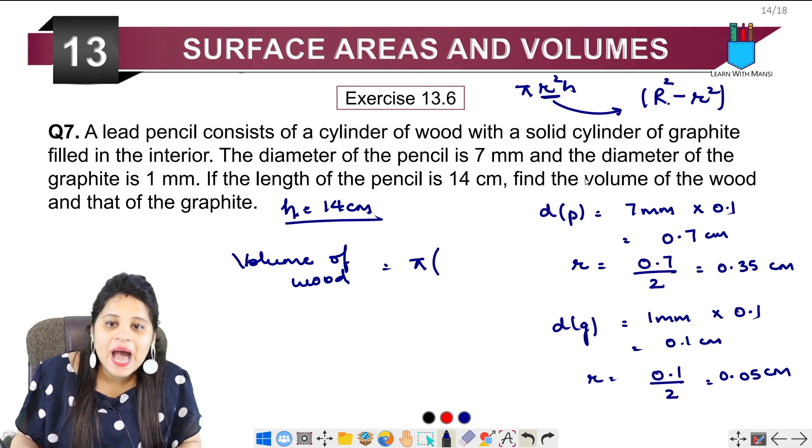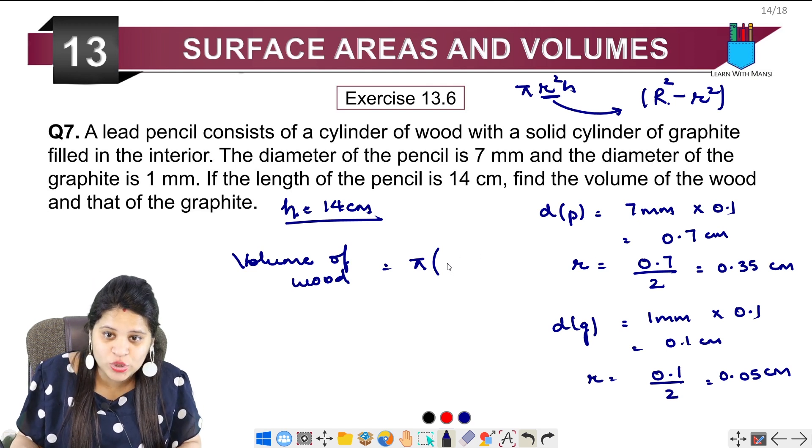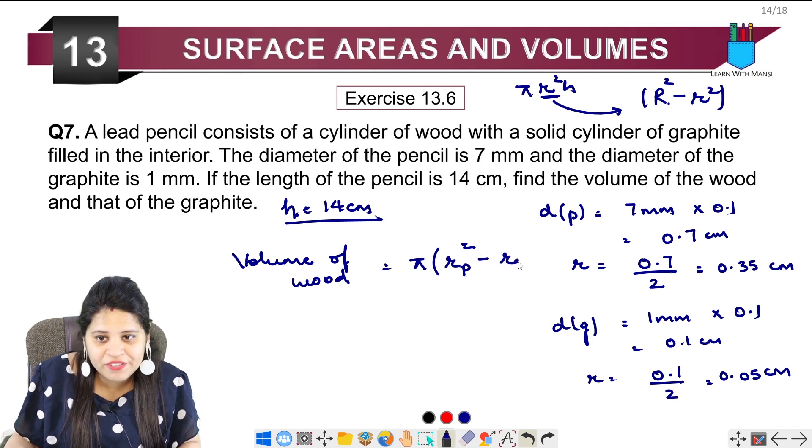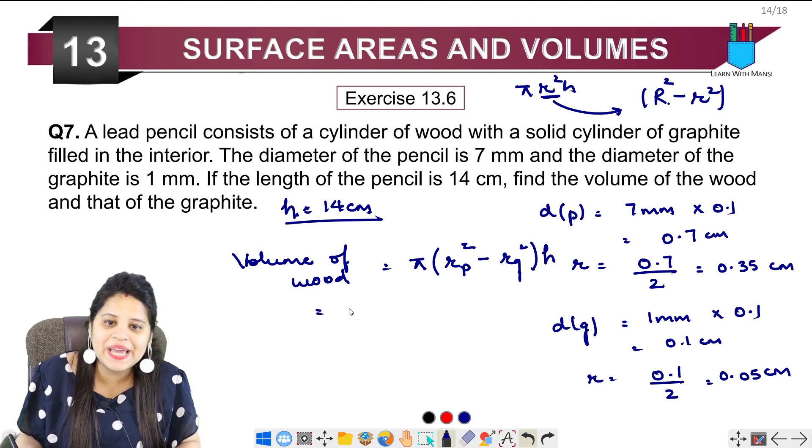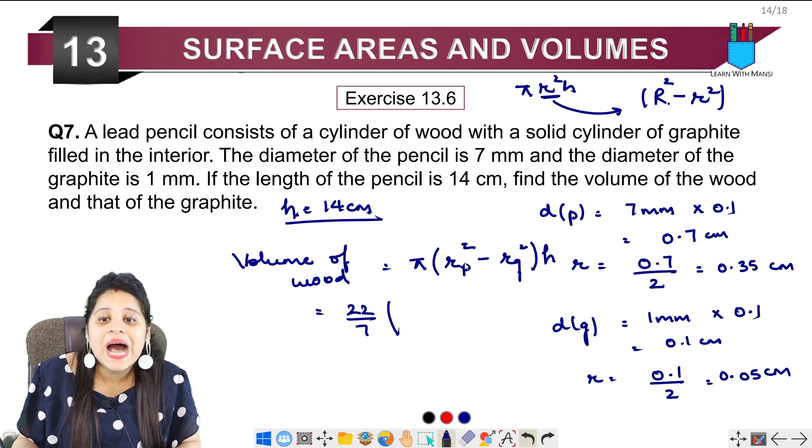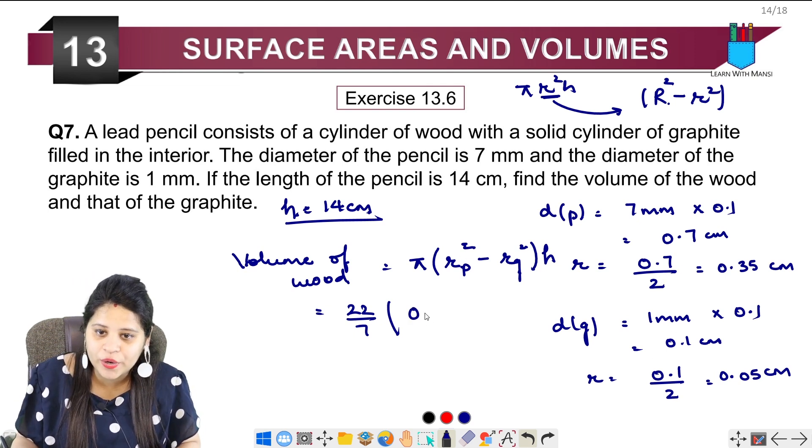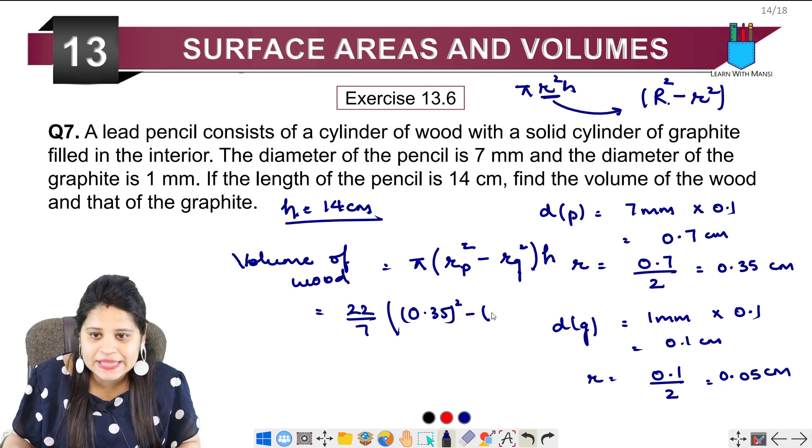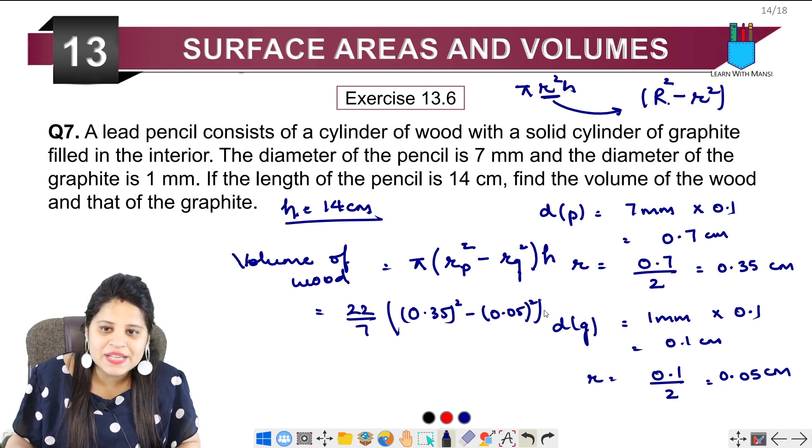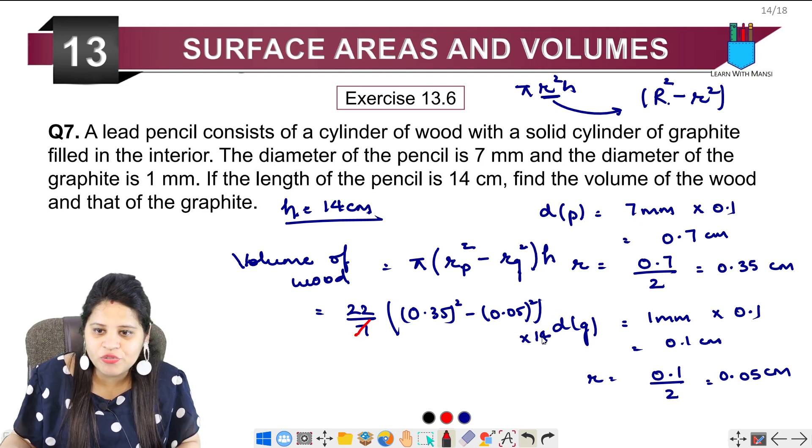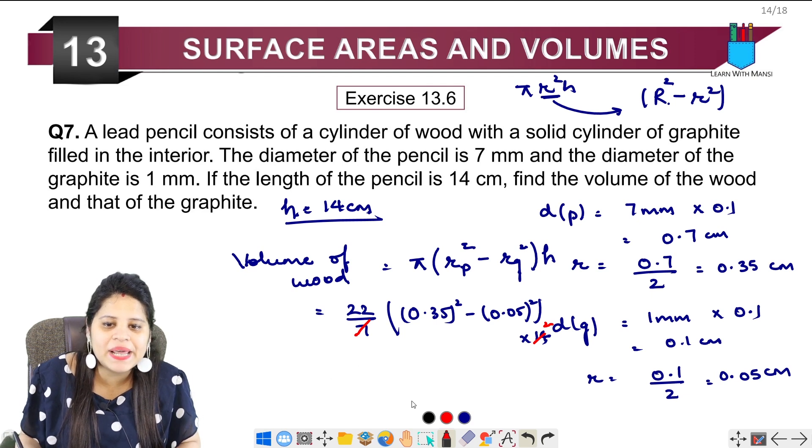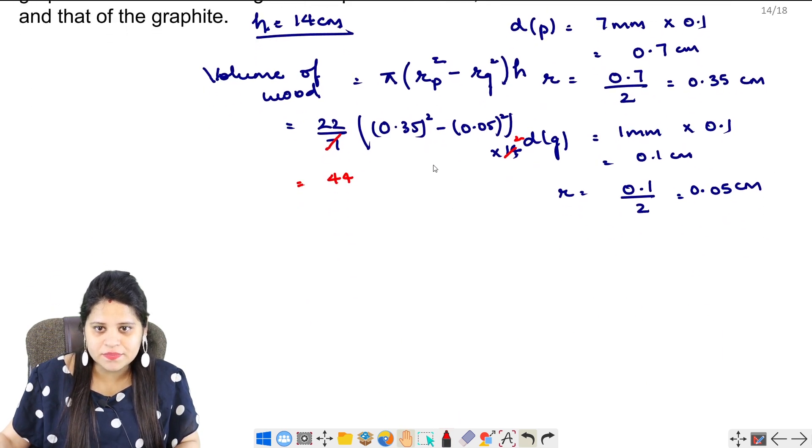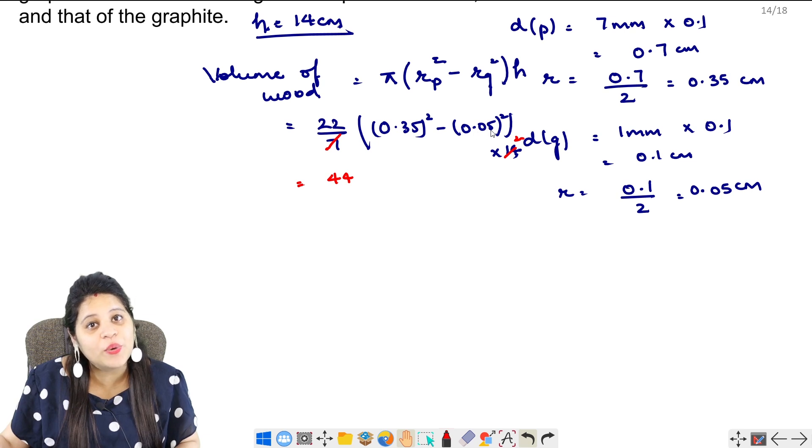So this is pi. Now capital R means the radius of pencil. So this will be Rp square then minus radius of graphite square and h. So pi is 22 upon 7. Rp is what is the radius of pencil? 0.35 square minus the radius of graphite square, 0.05 square and multiplied by 14. So we will cut 7 and 14. Here will be 2 and multiply it and 44.